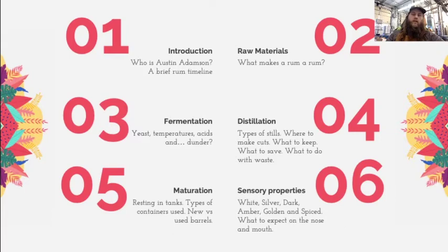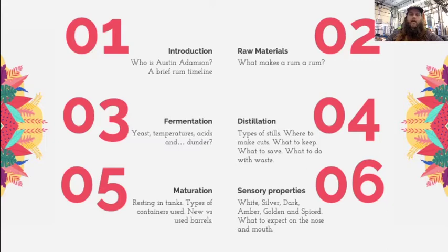Once we go through the basics of the raw materials, I'll talk about using those materials in a fermentation and the different challenges you may encounter that aren't always present depending on the sugar sources you're using. After fermentation, we'll move into distillation, covering the different types of equipment used, how and when to make your cuts, and the variety of interesting uses for the byproducts created.